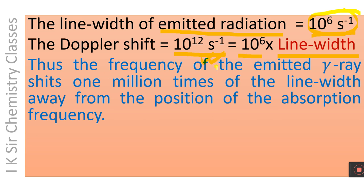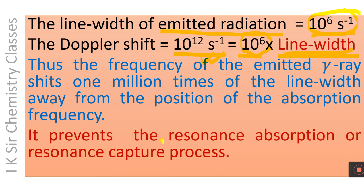Thus, the frequency of the emitted gamma ray shifts 1 million times the line width away from the position of the absorption frequency. The Doppler shift is 10⁶ times — that is, 1 million times — the line width, and this prevents the resonance absorption or resonance capture process.